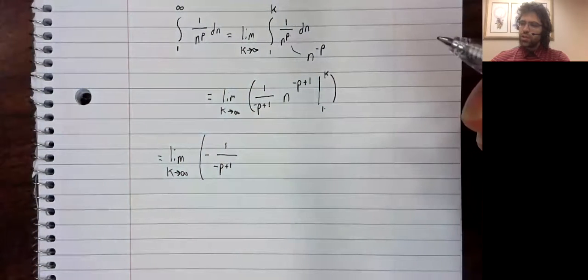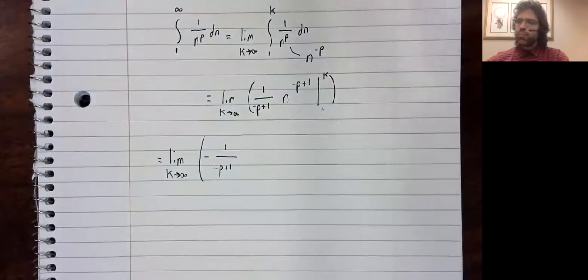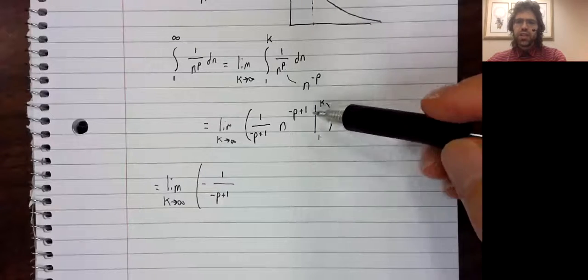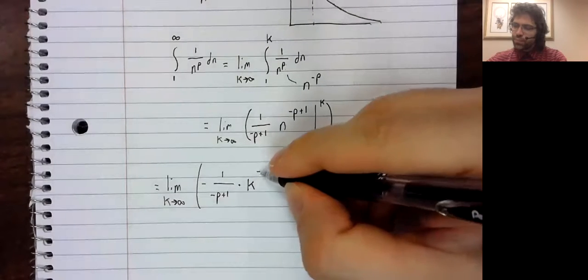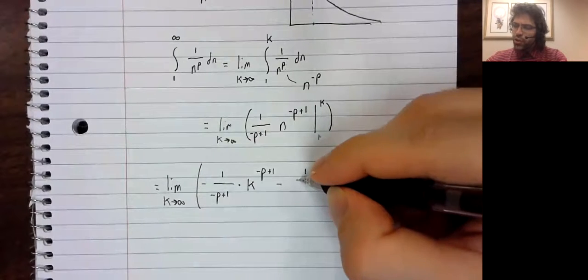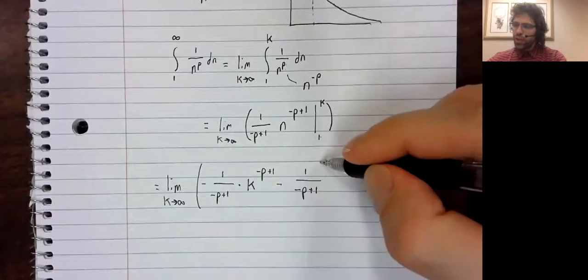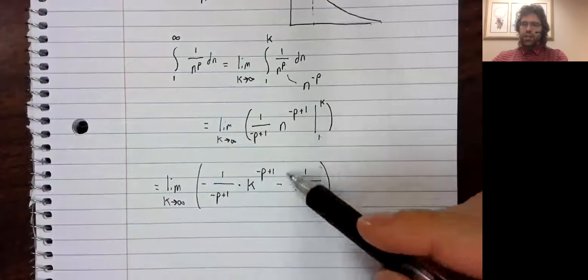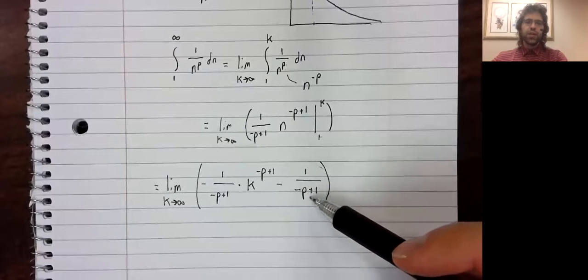Let's see. Sorry, blanking a little. Our variable is N. That's right. K is going in for N. And then one also goes in for N. This is a finite thing. It's not going to affect whether this converges or diverges.